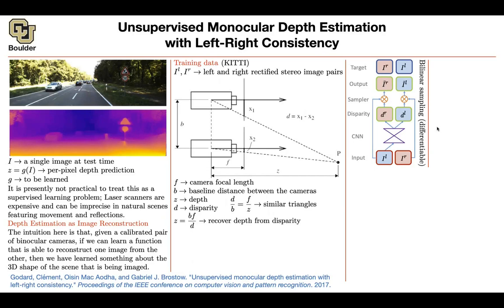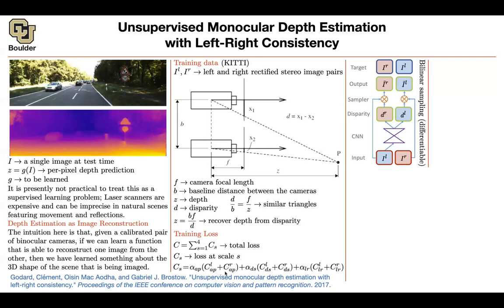Once you write down your loss function, you train the neural network. During training you take an image, push it through your architecture, and get both D_R and D_L. You can discard D_R at test time and just report D_L, from which you compute depth. The loss function has a couple of components — first, you look at your images at different scales and different resolutions, and then you have different weighted components.